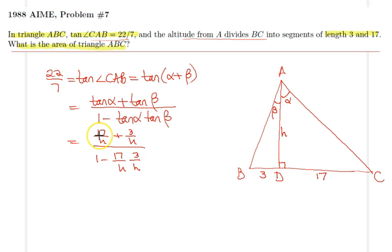That would be equivalent to 22 over 7, which equals - we have a common denominator here - 20 over H on the numerator, and in the denominator we have H squared minus 51 over H squared. We can make some cancellations here.